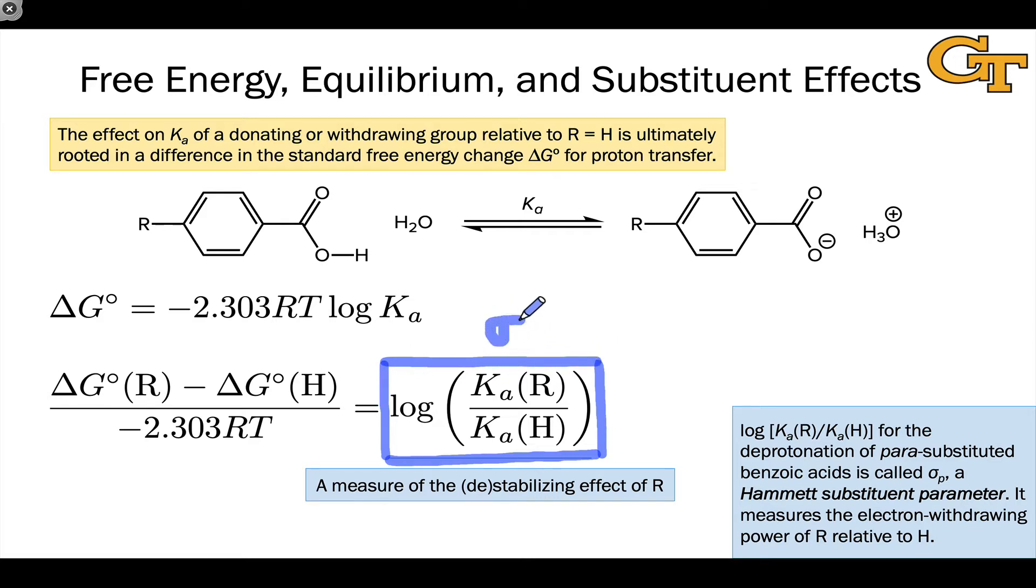Sigma p essentially is a measure of the electron withdrawing or donating power of the substituent in this specific reaction. In this video, we're going to survey some sigma p values, rationalize some of those values using structural arguments, and then look at other examples of Hammett sigma parameters, realizing that sigma p really rigorously only applies in this specific reaction.